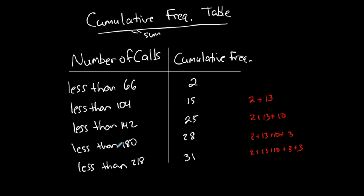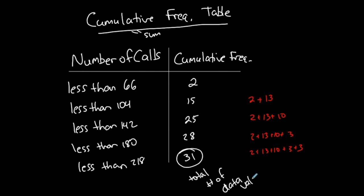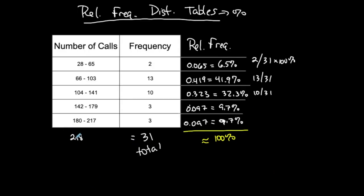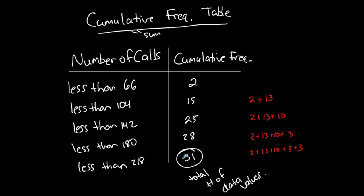It's no coincidence that the last cumulative value equals 31, the total number of data values. Because it's cumulative, that last row uses the lower class limit of an imaginary next class, so it includes everything — 100% of all data values. This is the cumulative frequency table. Remember: cumulative always means sum.